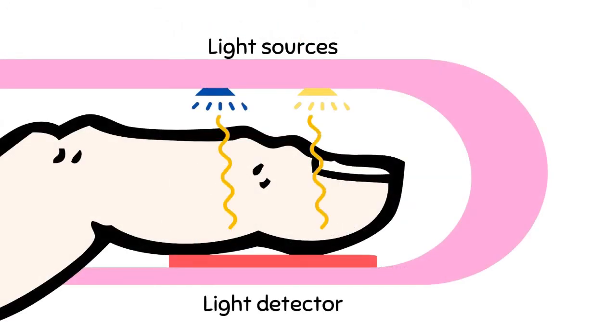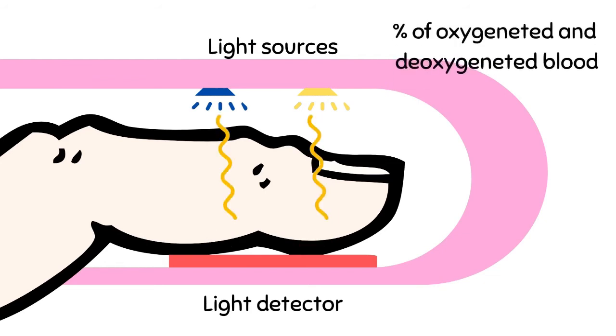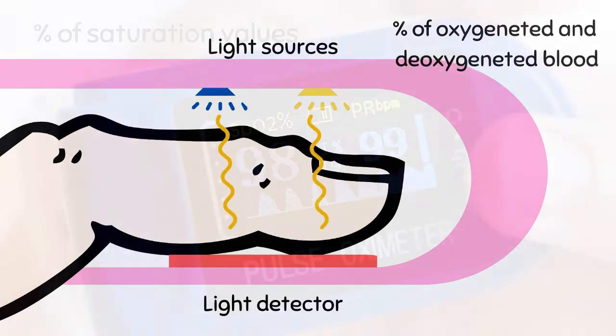When this is put around the finger, the two lights of 650 and 950 nanometers pass through our tissues and measure the amount of light that reaches the detector. The measurement is converted by the tiny chip to the corresponding percentages of oxygenated and deoxygenated blood.